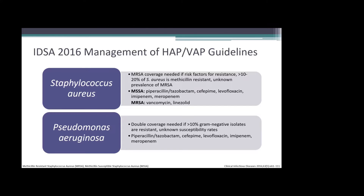In terms of Pseudomonas, it is recommended to double cover in patients with a risk factor for resistance — if more than 10% of gram-negative isolates are resistant, or in an ICU where antibiotic susceptibility rates are not available. Agents recommended for Pseudomonas coverage are the same as those used for MSSA coverage.